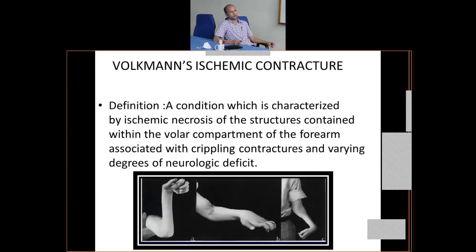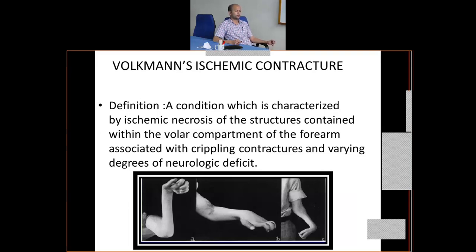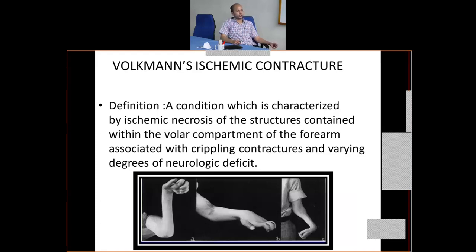Volkman's Ischemic Contracture was first described for the upper limb — specifically the forearm. However, ischemic contracture can occur anywhere: in the legs, foot, or thigh. Whenever there is compartment syndrome in any of these areas left untreated, it may lead to contracture. But Volkman described this condition first in the context of supracondylar fracture. So Volkman's Ischemic Contracture specifically refers to forearm contracture caused by compartment syndrome, characterized by ischemic necrosis of the volar compartment structures with crippling contractures and varying degrees of neurological deficit.